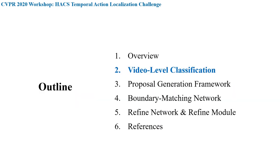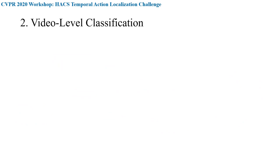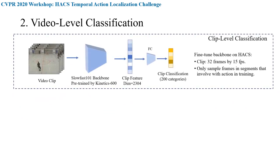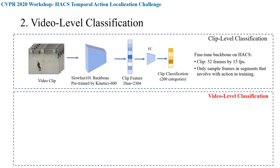Next, I will introduce the video-level classification method. To train the classification model, we first use SlowFast pre-trained on Kinetics-600 as our backbone. We only sample frames in segments that involve action to fine-tune it. We then propose a video-level classification method to improve classification performance.